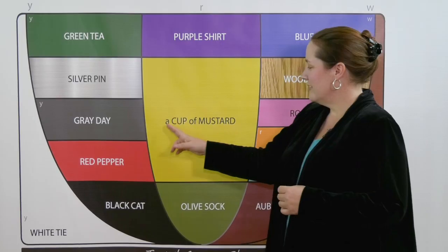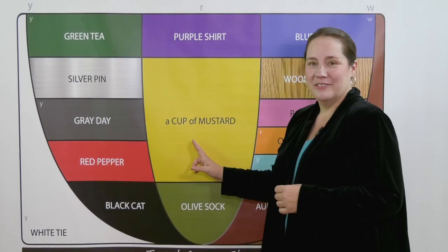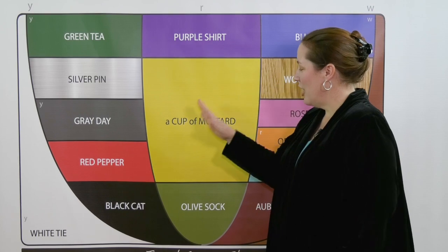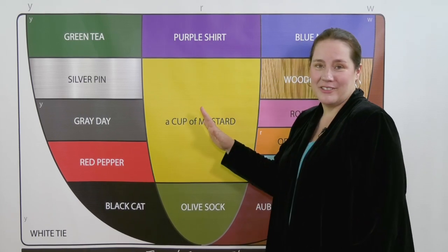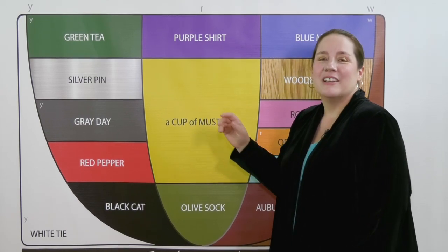Schwa is the opposite of stress, and it's found in the words 'a' and 'of' in 'a cup of mustard.' Here's how it works.